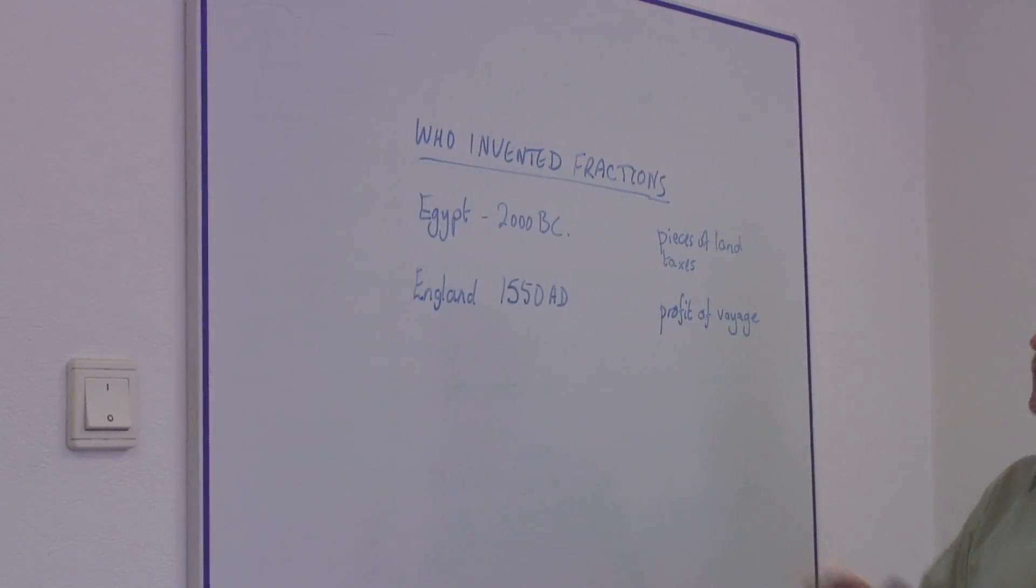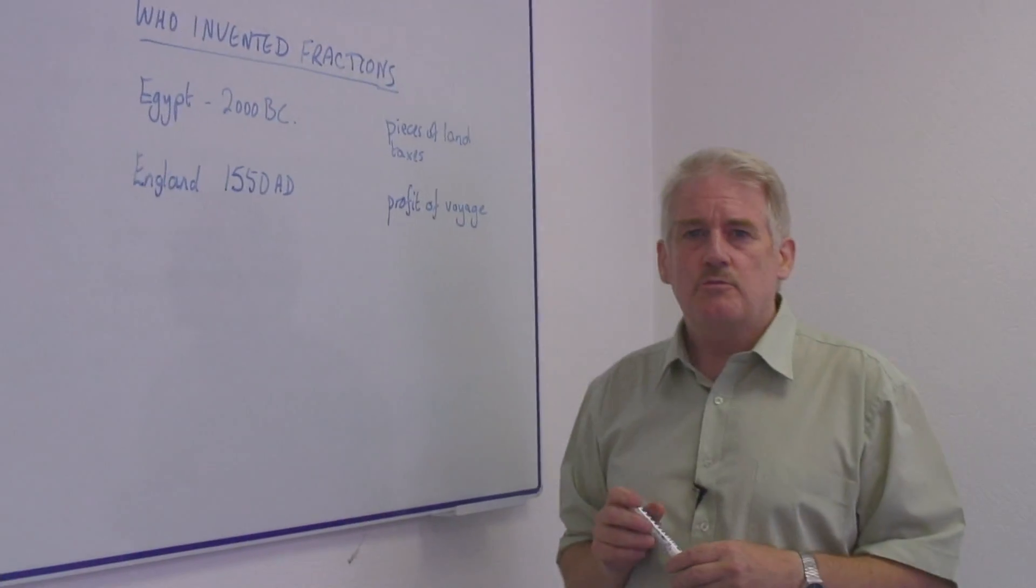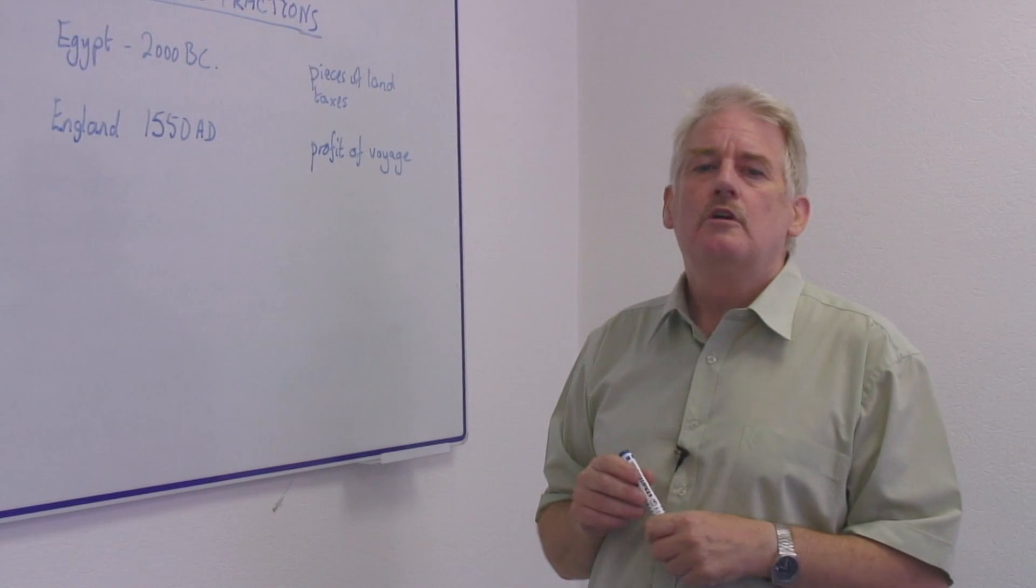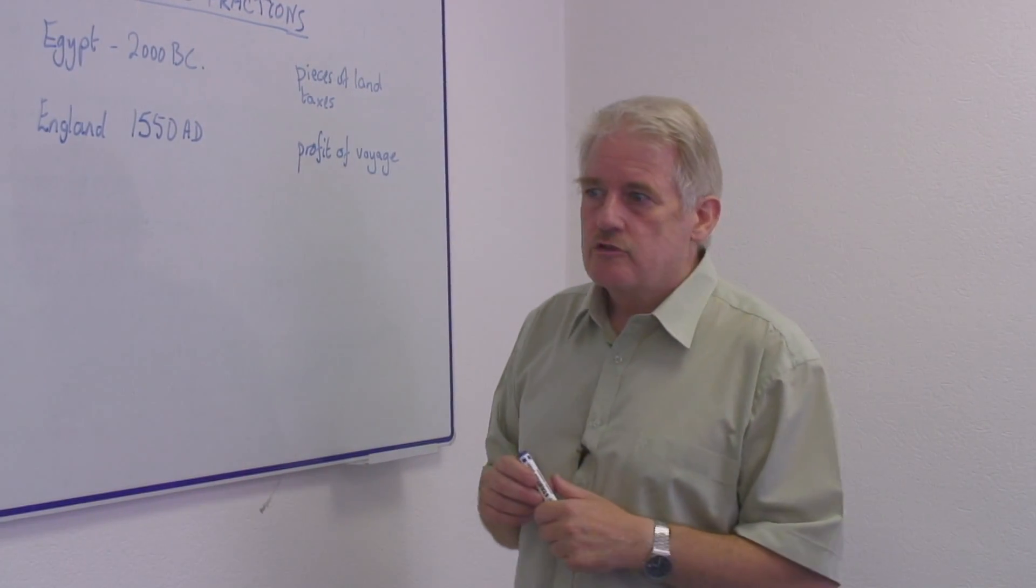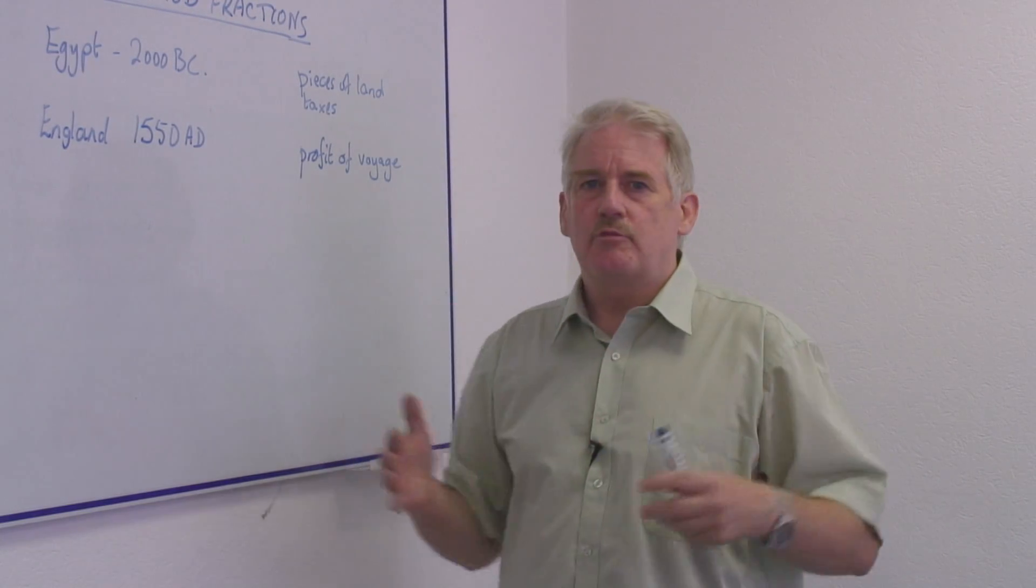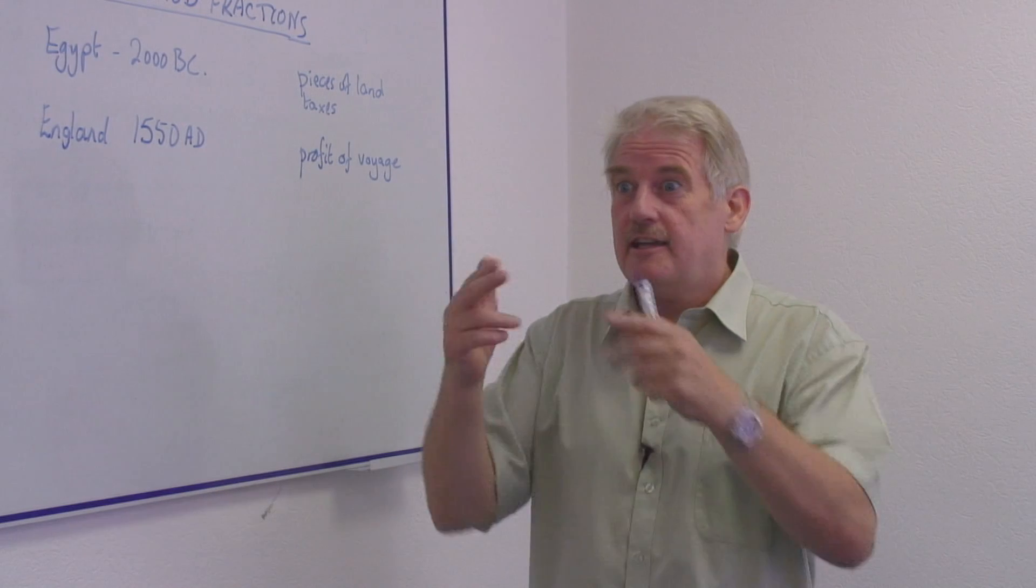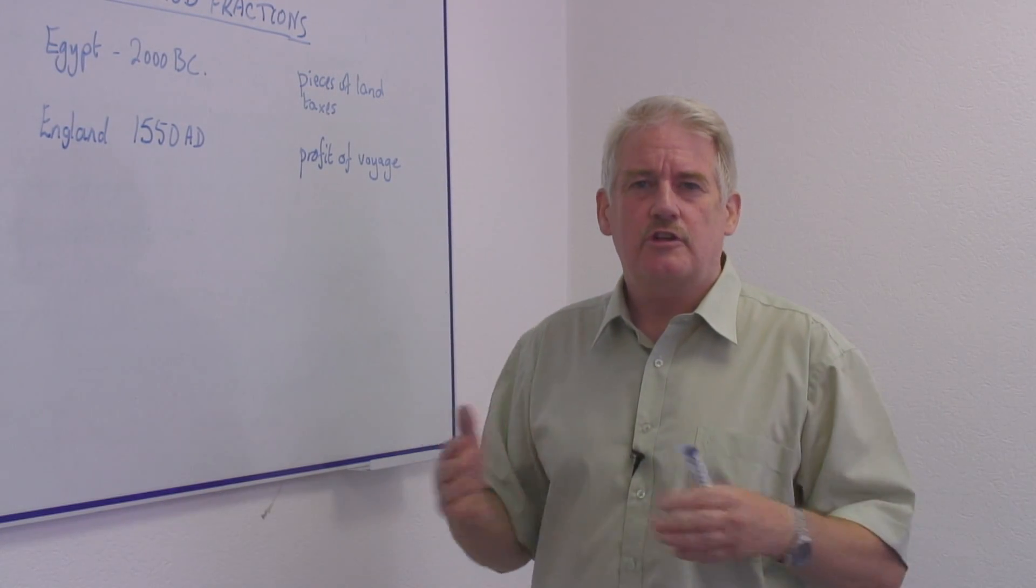What we do know is that 4,000 years ago, around 2,000 B.C., in Egypt, fractions were used to describe taxes. So when a piece of land was taxed, or an area was taxed, it was divided into sections, and each section was taxed according to a certain amount.